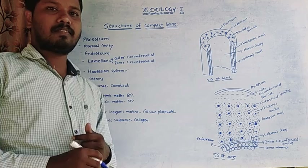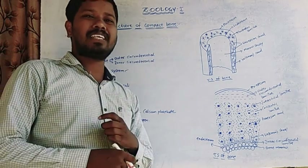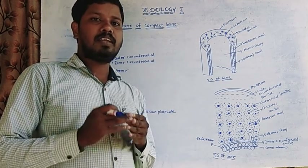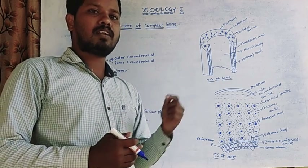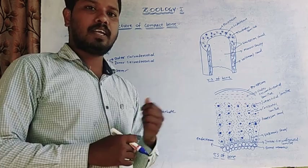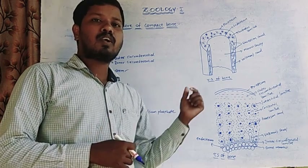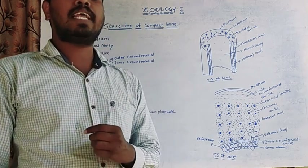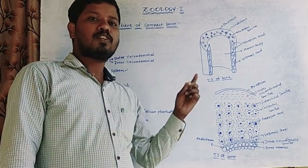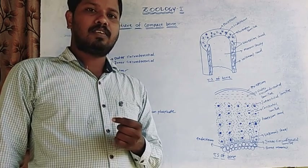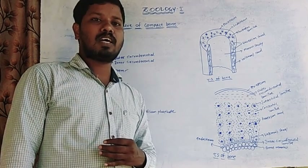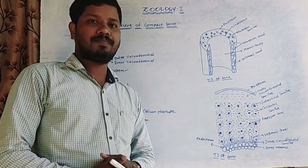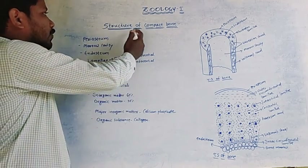In this session, we will explain the structure of compact bone. Skeletal connective tissue is divided into two types: cartilage connective tissue and bony connective tissue. Cartilage connective tissue is divided into three types: hyaline cartilage, elastic cartilage, and fibrous cartilage. Bone skeletal connective tissue includes four types of bones: cartilaginous bones, investing bones, sesamoid bones, and visceral bones. Now we discuss the structure of compact bone.